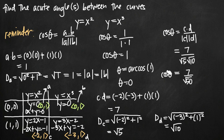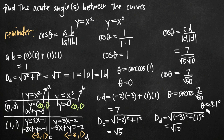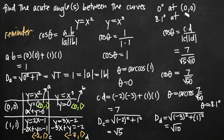Solving for theta by taking the inverse cosine of both sides, theta equals arc cosine of 7 over the square root of 50. With the calculator in degree mode, theta is approximately equal to 8.1 degrees. So 8.1 degrees is the angle between these two tangent lines, which we call the angle between the two curves at their point of intersection (1, 1). My final answer is: the angle is 0 degrees at the point (0, 0), and approximately 8.1 degrees at the point (1, 1). These are the acute angles between the curves.